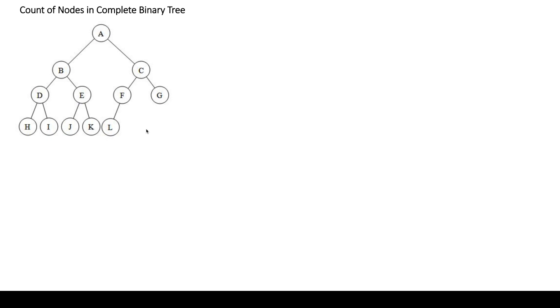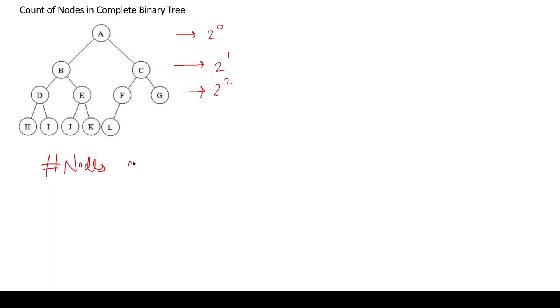Before moving to the advanced solution, let's discuss some properties of complete and full binary trees. In a complete binary tree, all levels are completely filled except possibly the last row. The number of nodes at depth h is equal to 2 to the power h, given that all nodes are present, i.e., the level is completely filled.